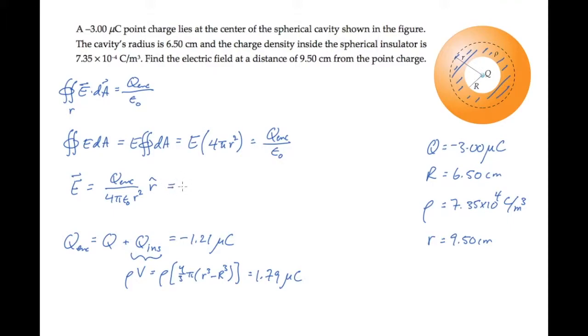Now we can substitute this along with the value of little r, which is 9.5 times 10 to the minus 2 meters, and the constant epsilon naught, to find that the electric field has a magnitude of 1.20 times 10 to the 6 newtons per coulomb. The net charge is negative, so this electric field is directed in the negative r hat direction.